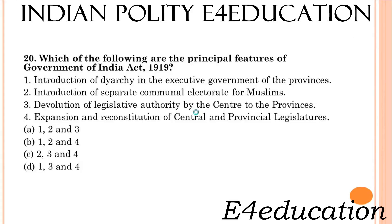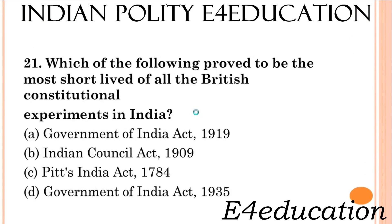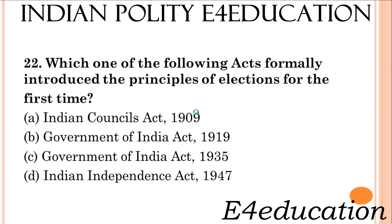Which of the following are the principal features of the Government of India Act 1919? The answer is statements 1, 3 and 4 are correct. Which of the following proved to be the most short-lived of all the British constitutional experiments in India? Indian Council Act 1909. Which one of the following acts formally introduced the principles of elections for the first time? Indian Council Act 1909.